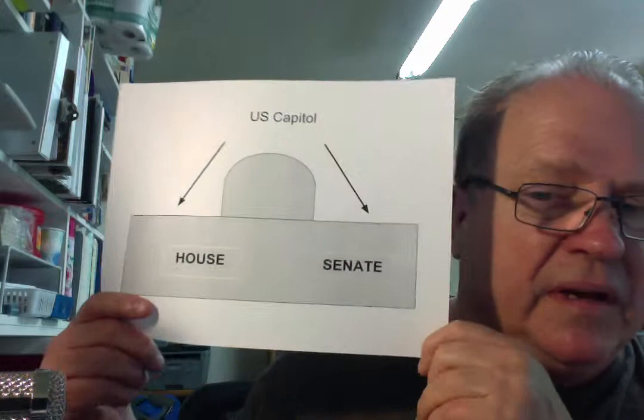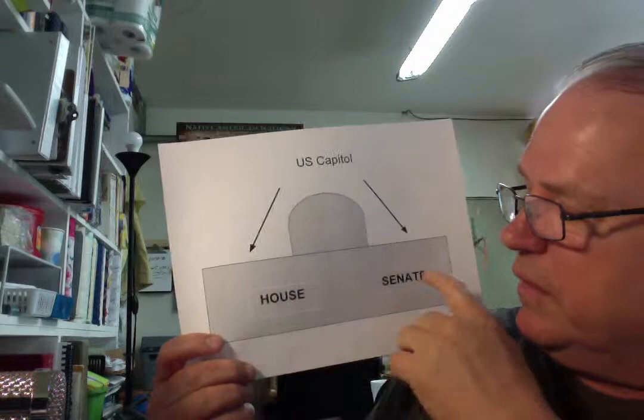So when we go into the House and the Senate, we're going to the legislative or lawmaking branch. I've got a little diagram to help you here. I took the U.S. Capitol and I'm showing it divided into two chambers.